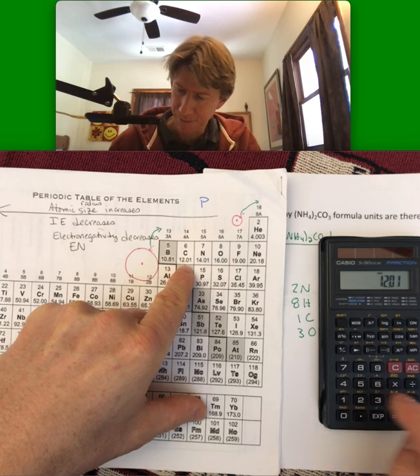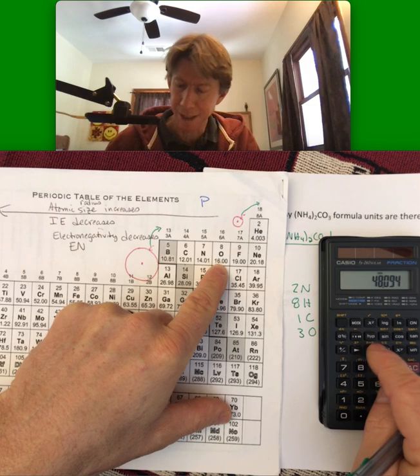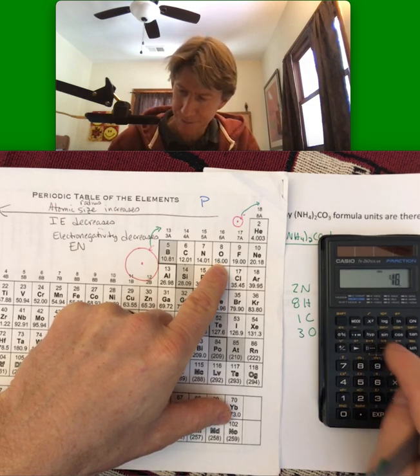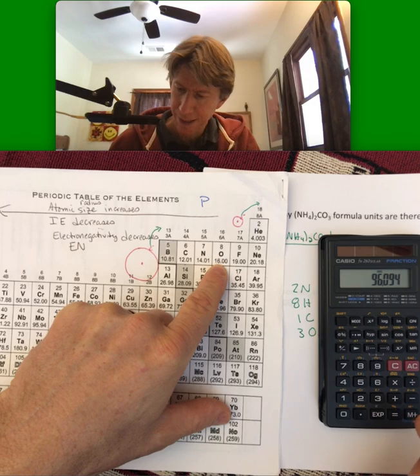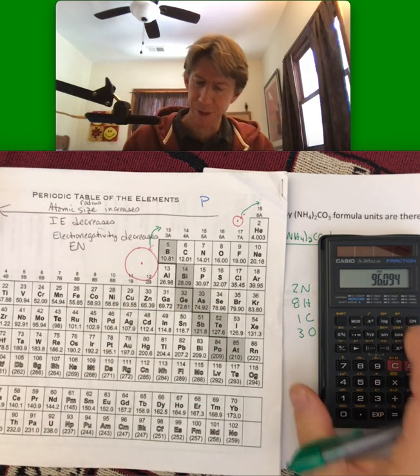Plus, I think I'm all right now, 12.01 plus, better use parentheses again, three times 16, 48, good. I get 96.09 for four sig figs for my molar mass.